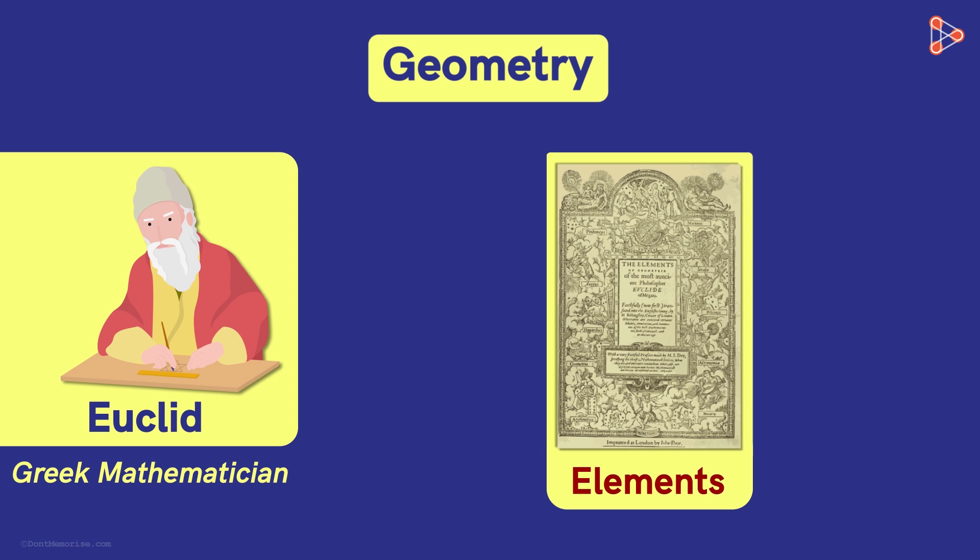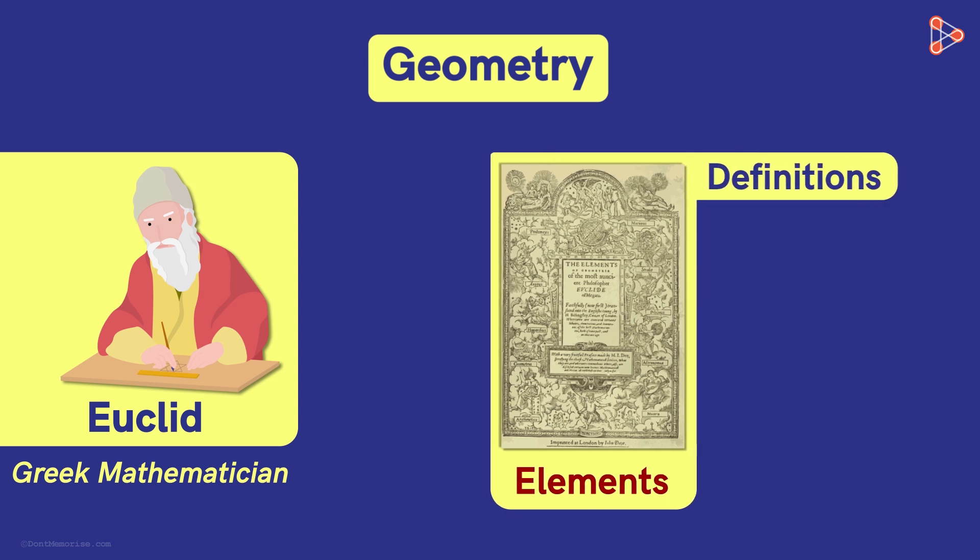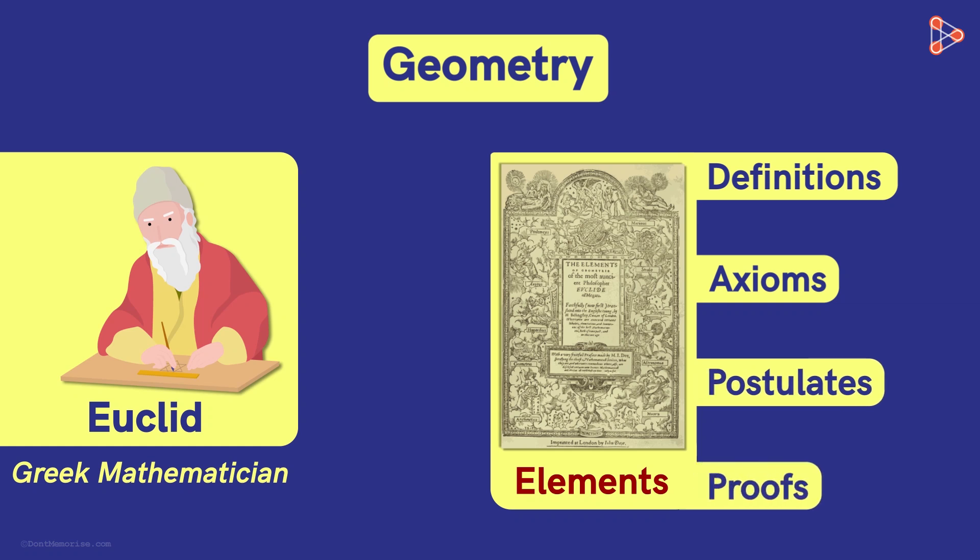His books contain definitions, axioms, postulates and proofs that we can use to prove things further ahead in complex geometry. We will try to cover some important definitions, axioms and postulates from his books that will help us in solving and proving theorems to make our understanding of geometry clearer.